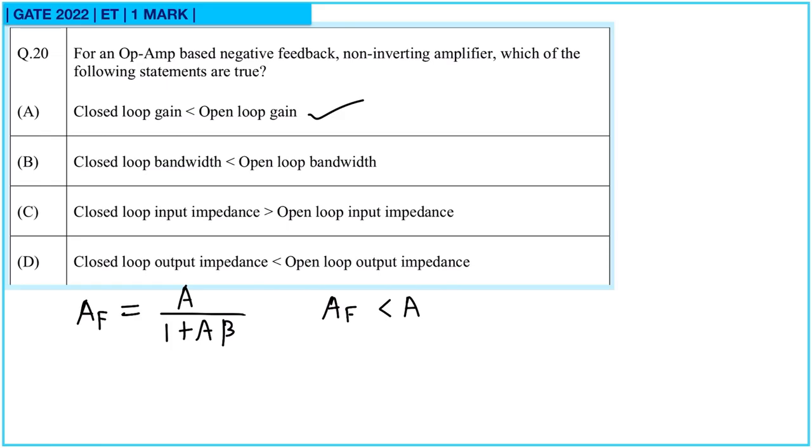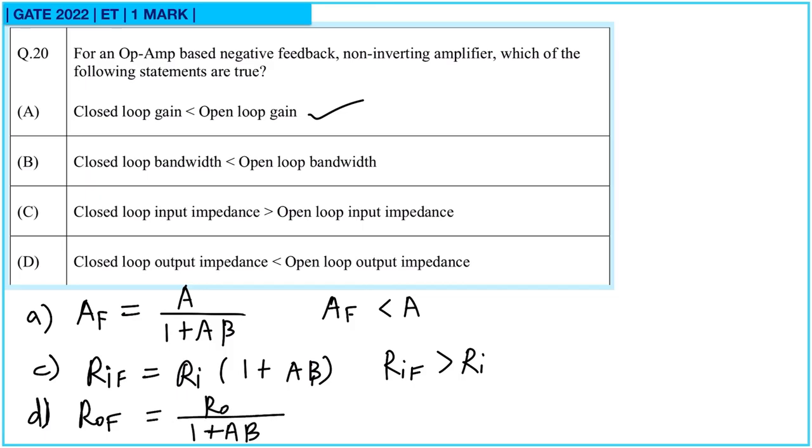B. Closed-loop bandwidth is less than open-loop bandwidth. Option C. Closed-loop input impedance is greater than open-loop input impedance. And closed-loop output impedance is less than open-loop output impedance. For option C, input impedance is equal to RA plus RA in bracket 1 plus A beta. That means input impedance after feedback is greater than input impedance without feedback. And ROF is equal to RO upon 1 plus A beta. That means ROF is less than RO. That means output impedance for feedback will be less than that for the open-loop circuit.